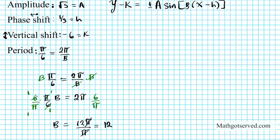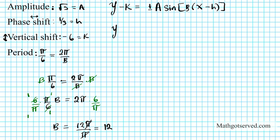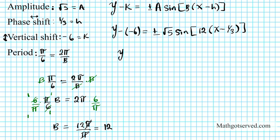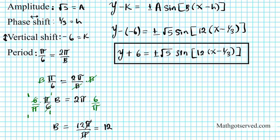Now we have enough information to generate our function. We have y minus k, where k is negative 6, equals plus or minus a which is the square root of 5, sine, b is 12, times x minus h which is 1 third. Simplifying the left side: minus and minus becomes plus, so y plus 6 equals plus or minus the square root of 5 sine bracket 12 times x minus 1 third. There goes the equation of the sine function with the given information.